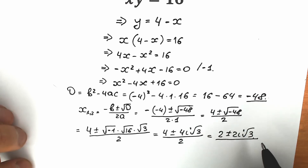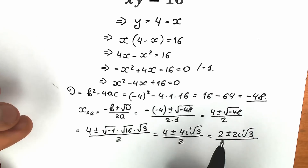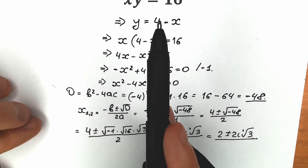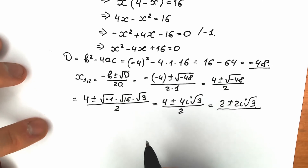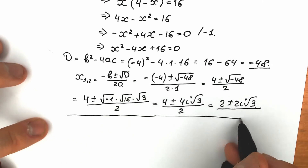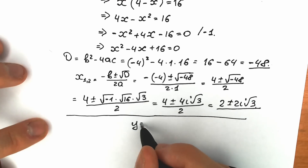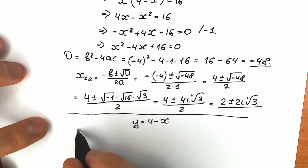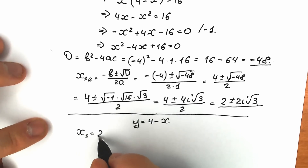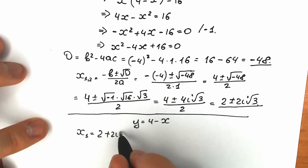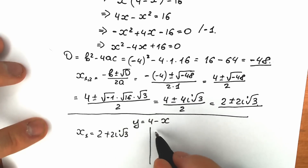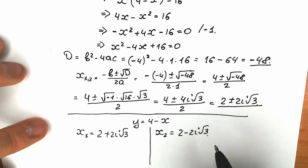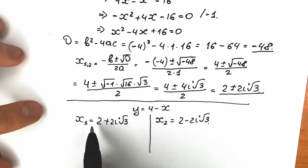We have two complex solutions for x: x₁ equals 2 plus 2i square root of 3, and x₂ equals 2 minus 2i square root of 3. Now let's find y using y equal to 4 minus x. Right now let's plug in each x value.